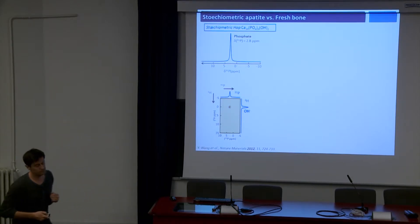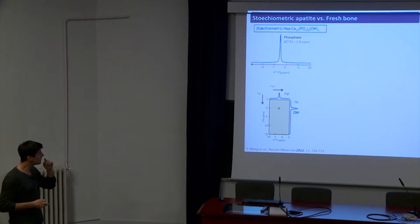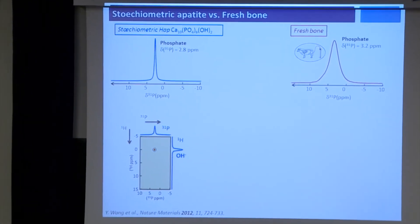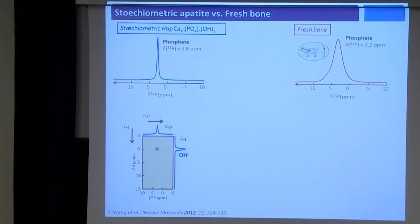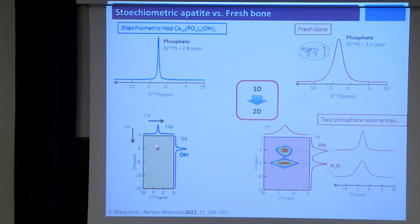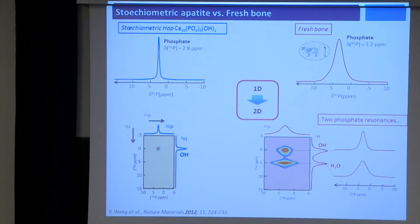That was for stoichiometric apatite — a good starting point, a reference sample. Let's now compare to intact bone. We get one single resonance, a little bit shifted compared to the stoichiometric one, with a bigger line width due to the local disorder around the phosphate ions in the structure. And if we run a two-dimensional experiment, instead of one site, we get two resonances instead of one. The first one is quite similar to what we get for stoichiometric apatite, because we have some phosphates correlating with hydroxyl groups at a specific chemical shift of zero ppm — no doubt that's the apatitic core. And a second group of phosphates — a second domain — with the same chemical shift but a little bit larger, correlating with water molecules.